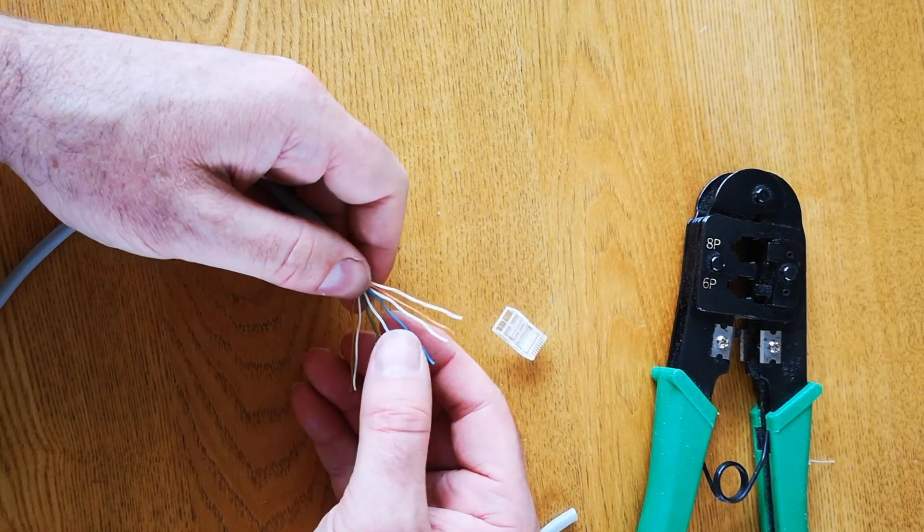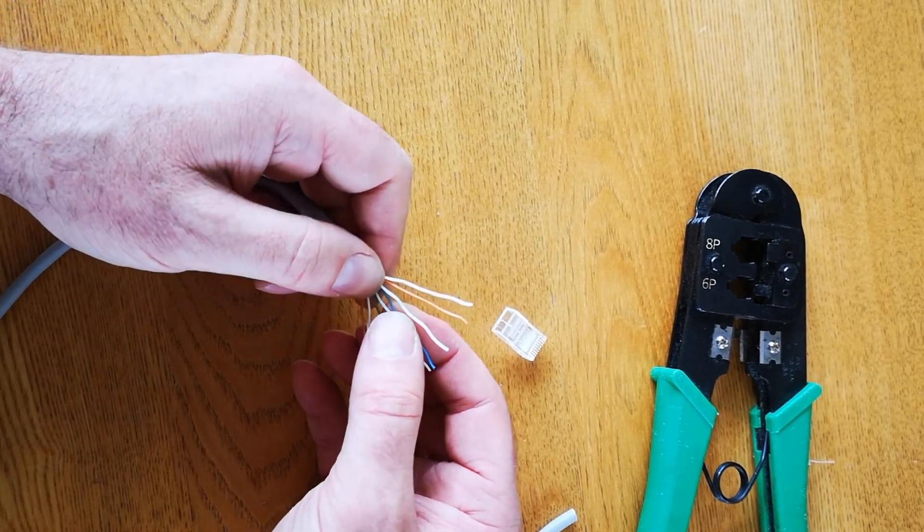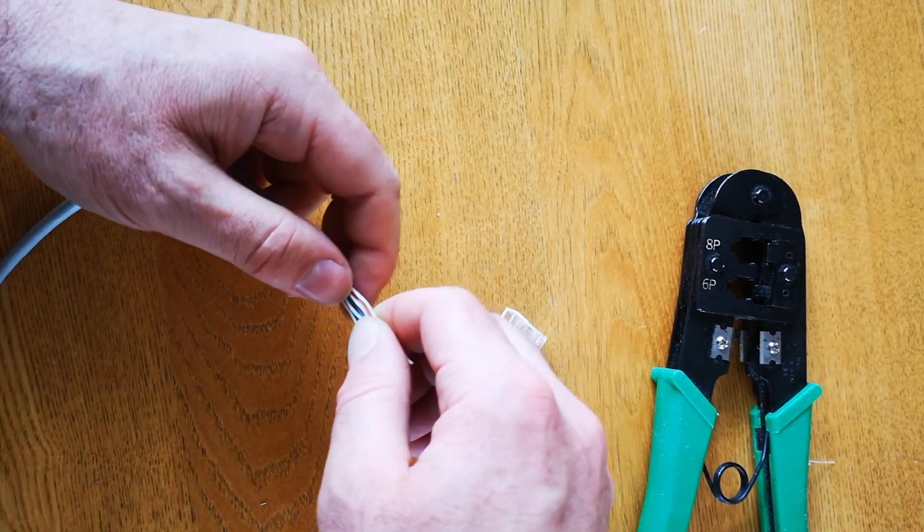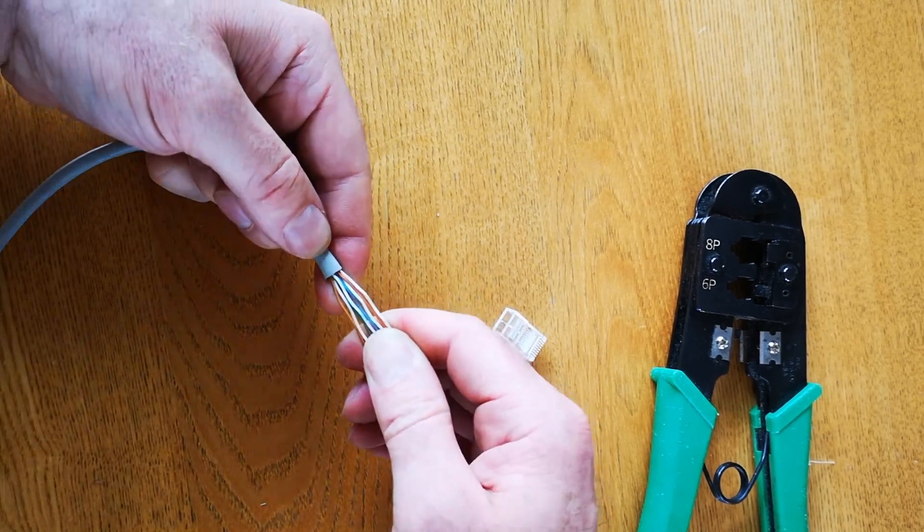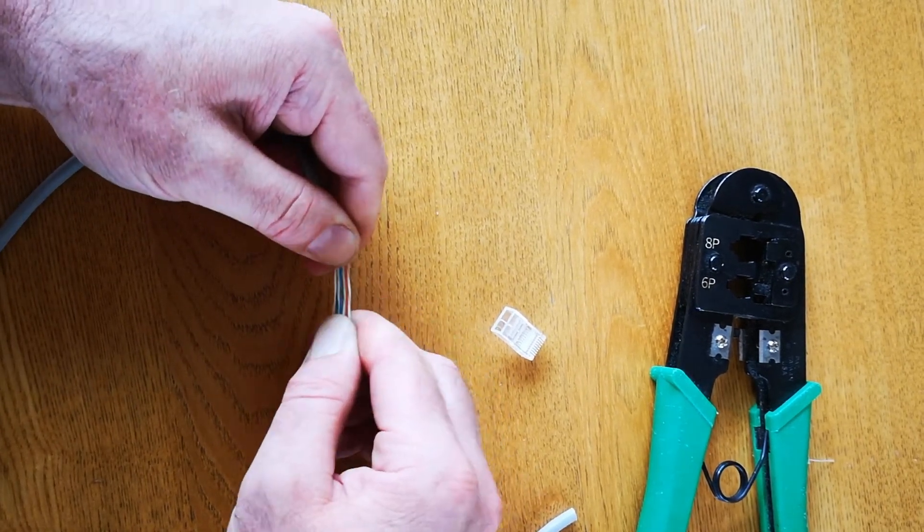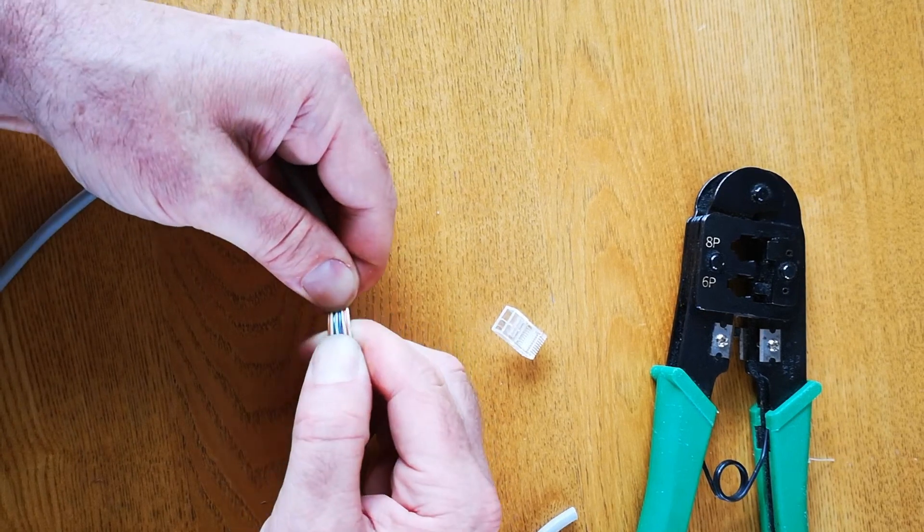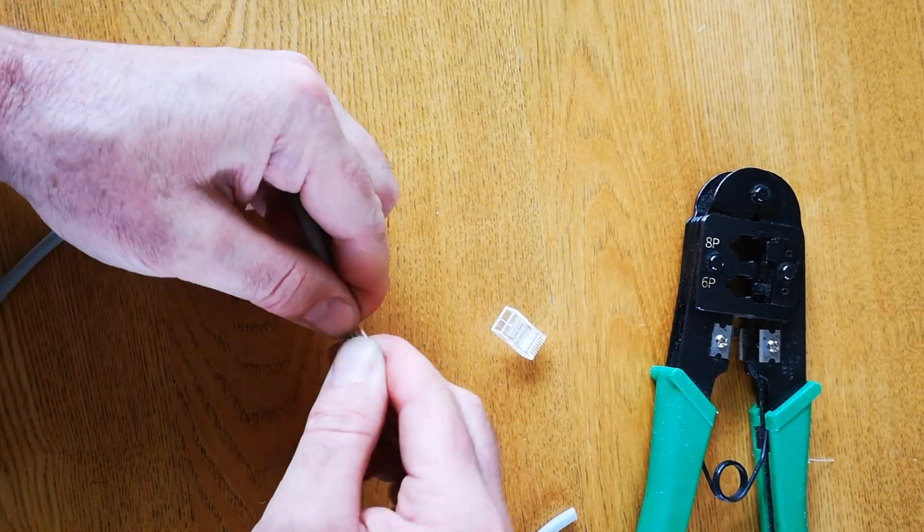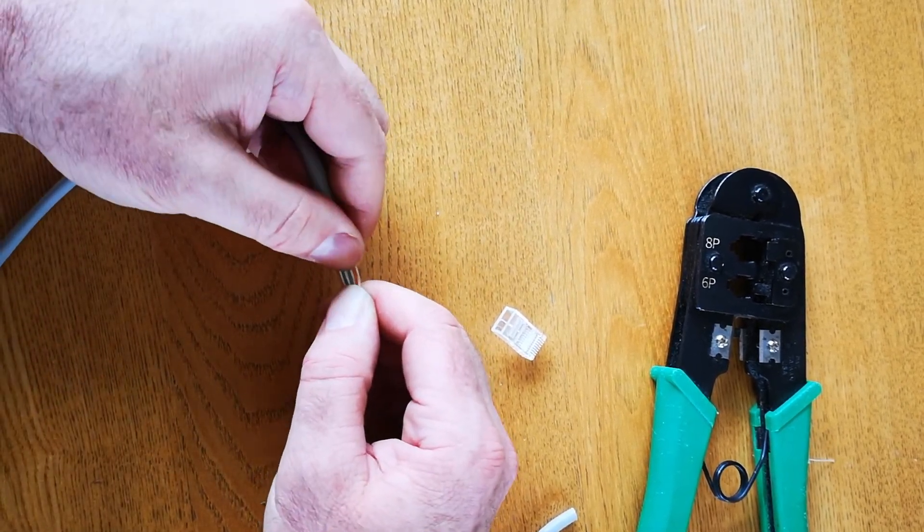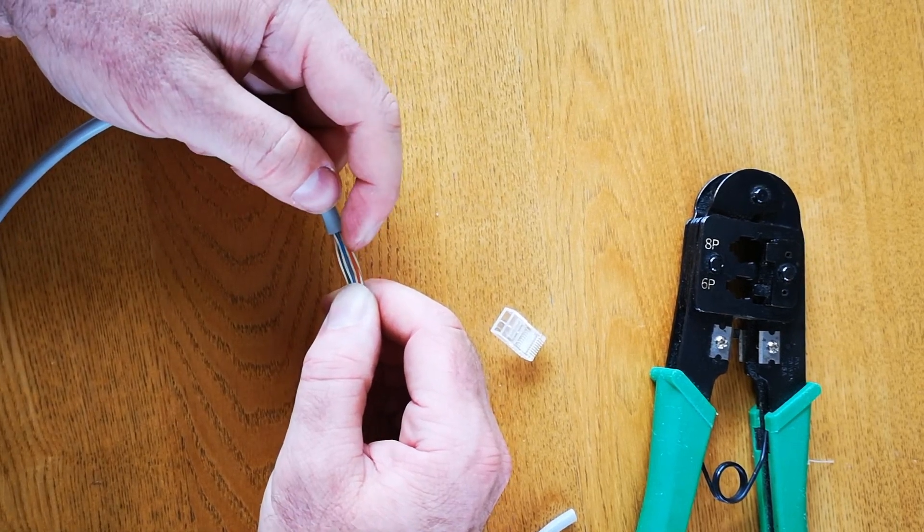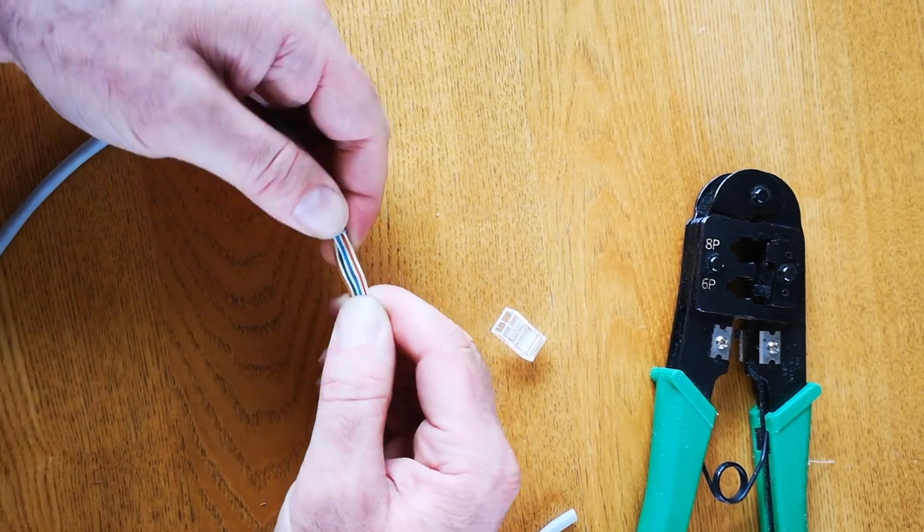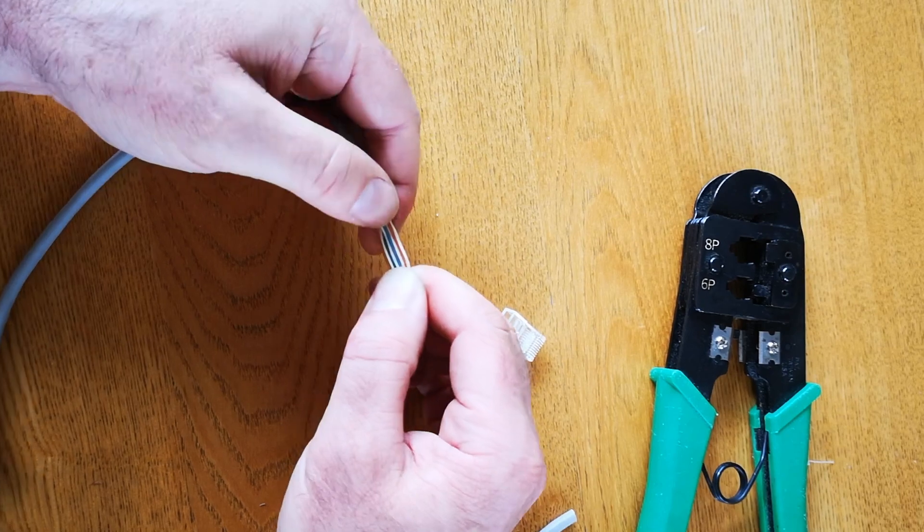Once you've started to get them straighter, you need to bundle them together in the correct order. So keeping the order as it is, just start to bundle them together so they start to look like a ribbon like this. And when you've made a ribbon like this, try to make the ribbon as straight as possible. So just use your fingers, wiggle it from side to side, just bend it slightly and try to get the wires as straight as you can. So they need to be straight and all together. And when you've done that, check that they're still in the same order. So we need orange stripe orange, green stripe blue, blue stripe green and brown stripe and brown. And they look to be in the correct order to me and are looking very much like a ribbon.